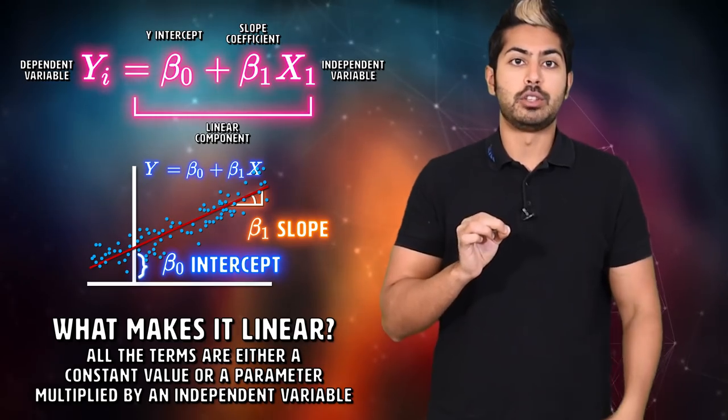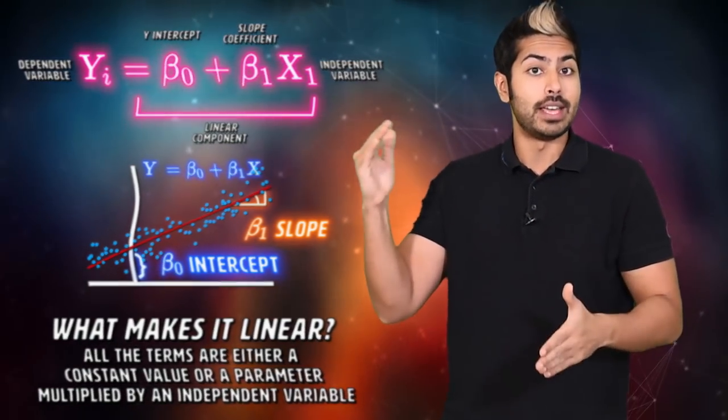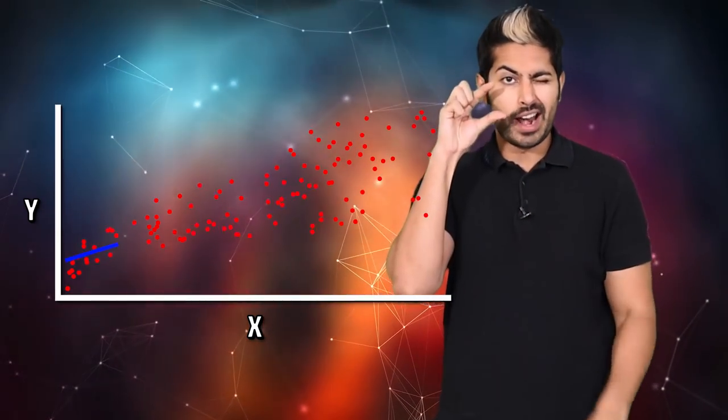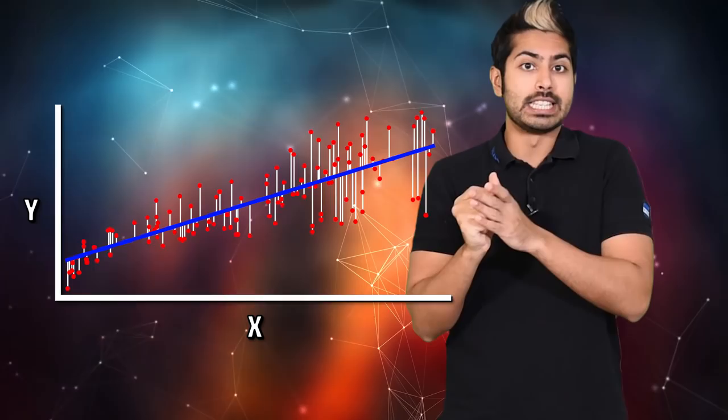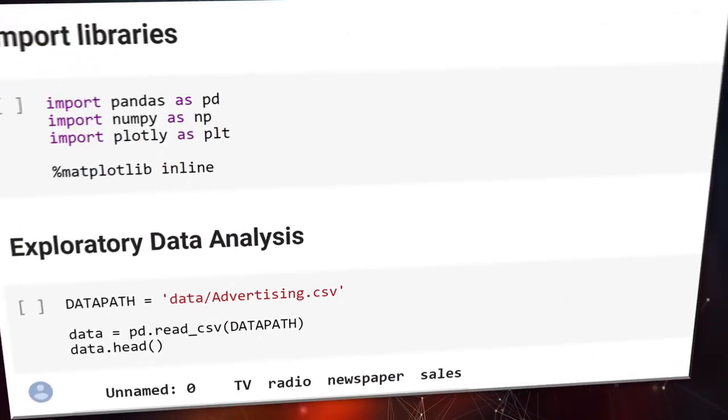The core idea is to figure out this model, which when plotted is the line of best fit for the data. The best fit line is the one where the total prediction error of all the data points are as small as possible. We can consider the error as the distance between the data point and the regression line.